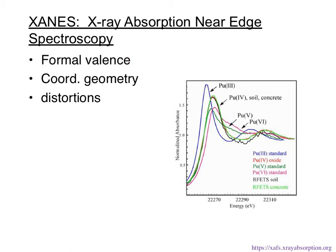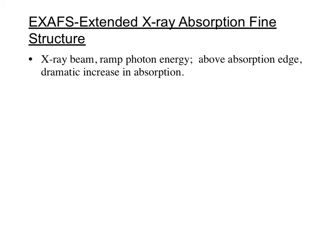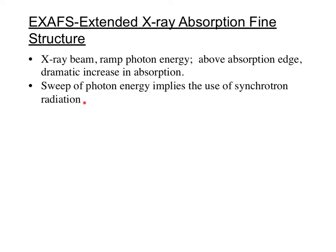The main information from near-edge spectroscopy is the formal valence of the metal; coordination geometry and distortions are best handled by X-AFS, extended X-ray absorption fine structure. This is an amazing technique. The X-ray beam ramps through a range of photon energies using synchrotron radiation — sweeping through a relatively large window — which requires specialized light sources. Above the absorption edge we see a dramatic increase in absorption as we sweep through with X-rays.